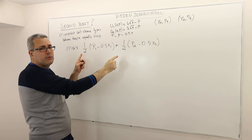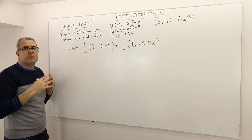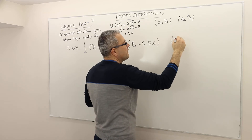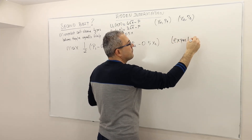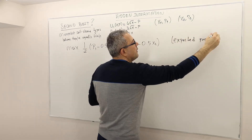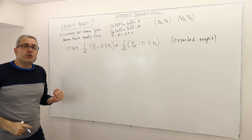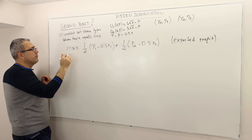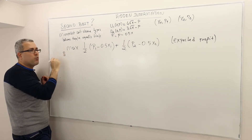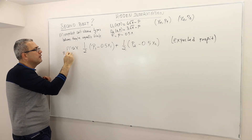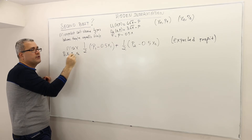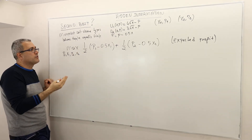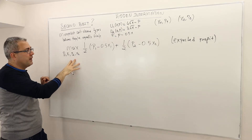With one-half probability, the profit is P2 minus 0.5X2 if the customer is type 2. These are the probabilities, and hence this is the expected profit of the monopolist. The choice variables are: the monopolist can choose P1, X1, P2, and X2 — four choice variables in total.